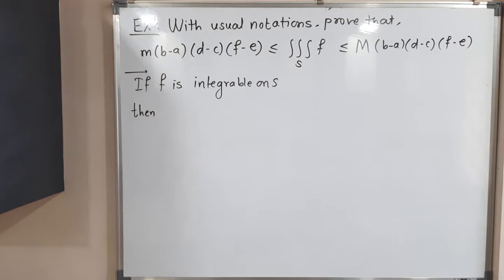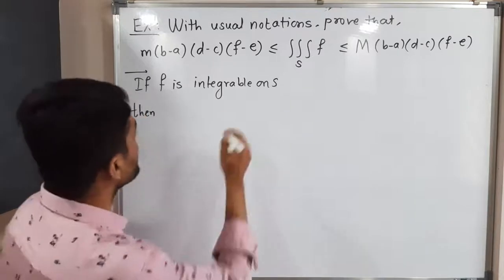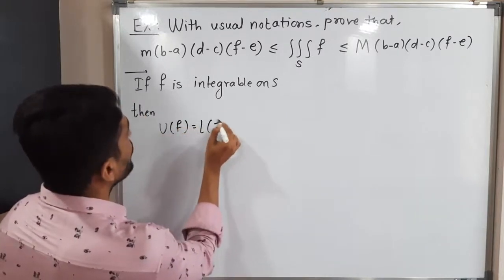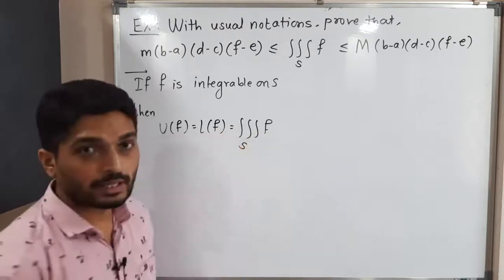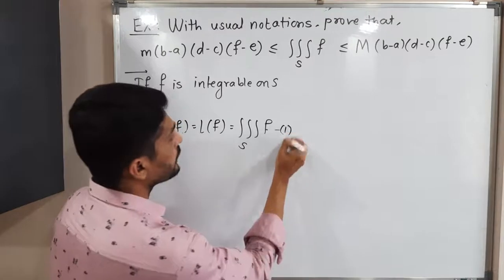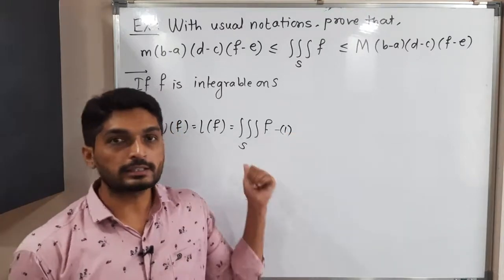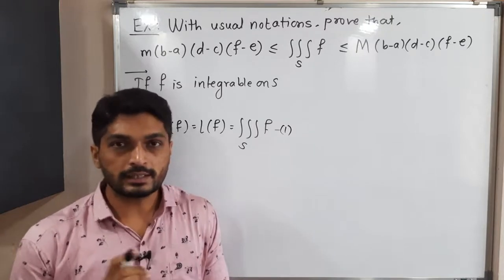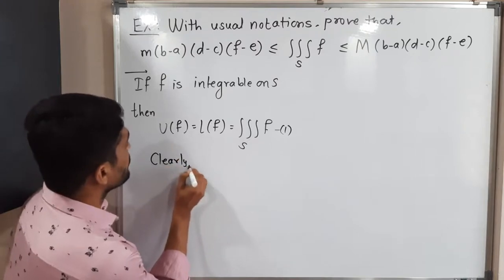We know that if f is Riemann integrable on S, then the upper integral equals the lower integral, and both equal the actual value of the triple integral of f over S. So if the function is integrable, all three are equal and represent the value of the triple integral.